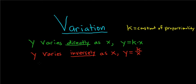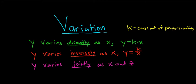The very last case is joint variation. Y varies jointly as X and Z, meaning it's proportional to two variables — hence the word jointly. So Y equals K times X times Z. The first type is called direct variation, the second is inverse variation, and the third is called joint variation or combined variation.